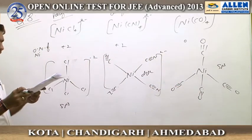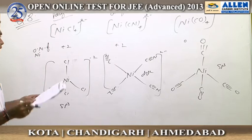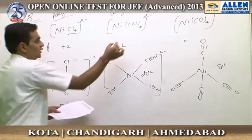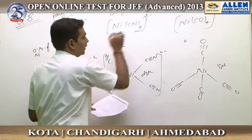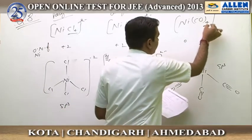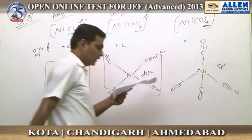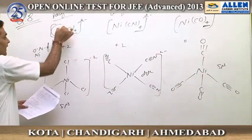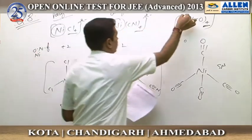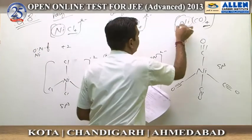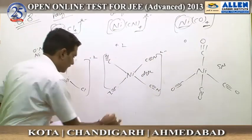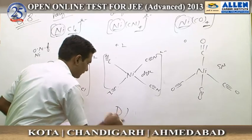Option D — coordination number and type of metal: this complex has coordination number 4, the second complex also has coordination number 4, and the third also has coordination number 4. All three complexes contain the same metal, nickel, though in different oxidation states. The metal is the same, so the answer is D.